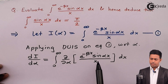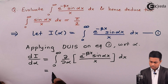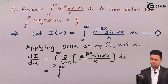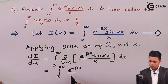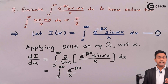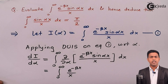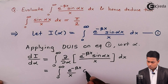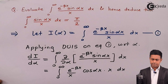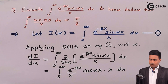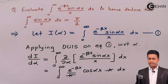Now let's differentiate this function with respect to alpha partially. The limits 0 to infinity remain as is. We have e raised to minus beta x, and upon x is outside since it is constant — it does not contain alpha. The derivative of sin(alpha x) with respect to alpha is cos(alpha x) times x. Now we can cancel x in the numerator with x in the denominator.